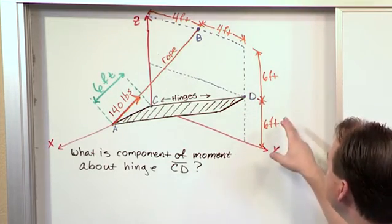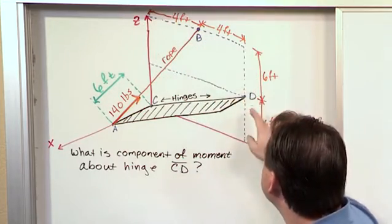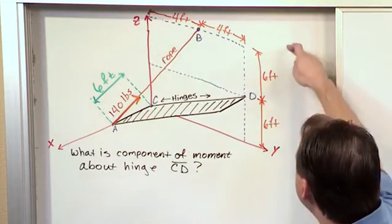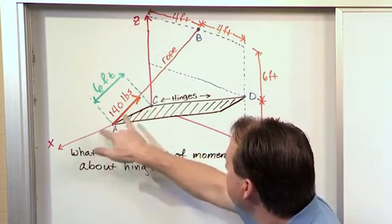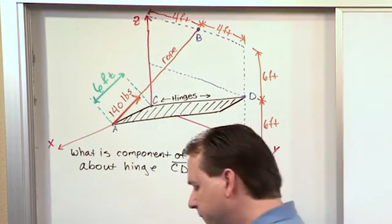Now we have some dimensions here. So the door is four feet there, four feet there. You have six feet and six feet here. The width of the door from here to here is also six feet.